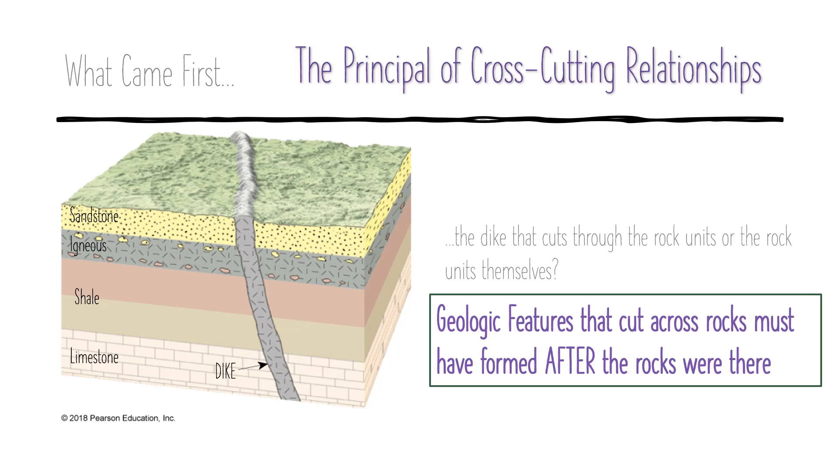Well, I hope you see that any feature in the crust that cuts through another feature has to be younger than the rock it cuts through. Think of it this way. What's older? The birthday cake or the first knife cut into the cake? This principle is called the principle of cross-cutting relationships and it simply states that rocks have to form before they can be cut into.